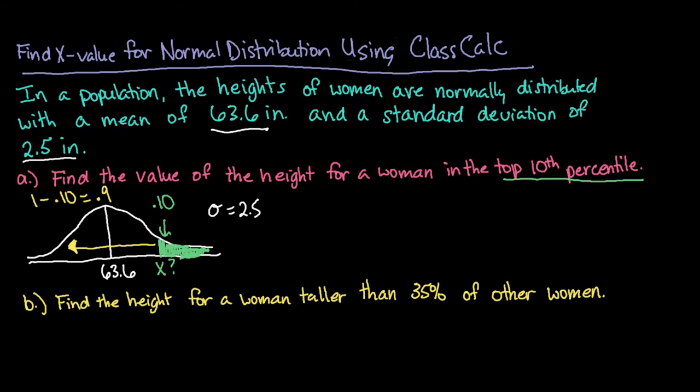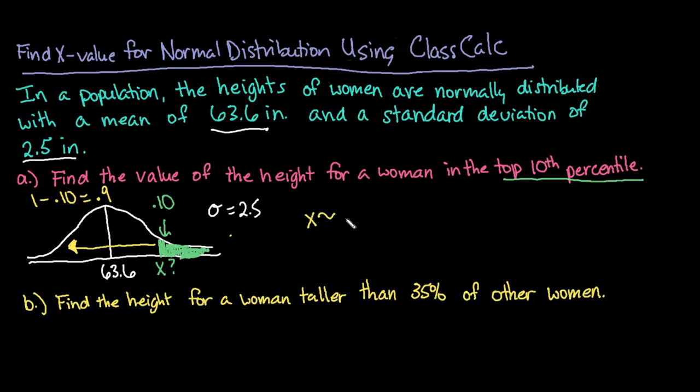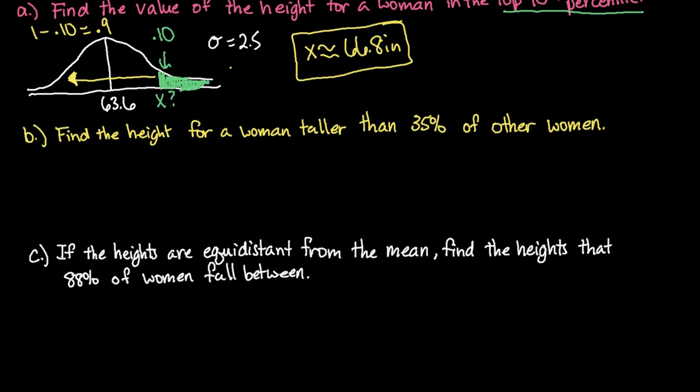I can either do 1 minus 0.10, which in this case is pretty easy, it would be 0.9. If it is difficult to do, you could plug that in here. So I could plug in 1 minus 0.10, which gives me the answer of 66.8, or I could have just typed in 0.9, and notice it gives me the same thing. So our x value for this one ends up being 66.8 inches. Anyone who is 66.8 inches or above would be in the top 10th percentile for women's heights in this population.